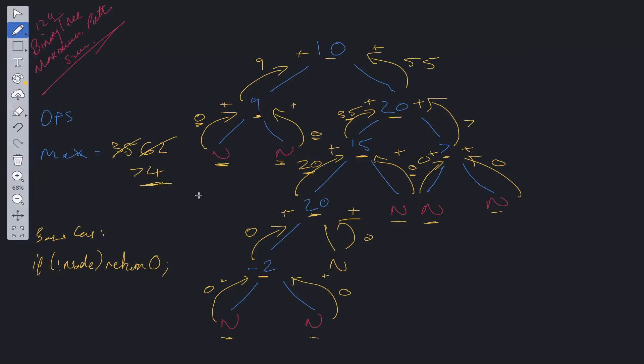The complexity analysis for this question: time is going to be O(N), where N is the number of nodes, since we visit each node no more than twice. And then space is going to be O(H), where H is the height of the tree.